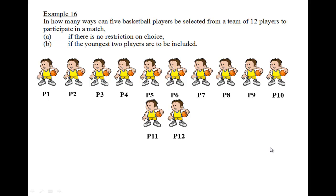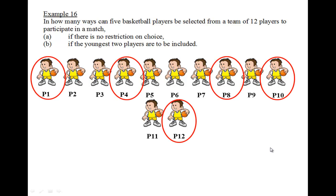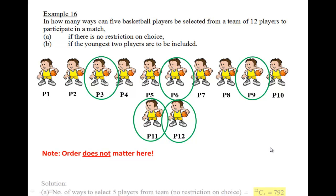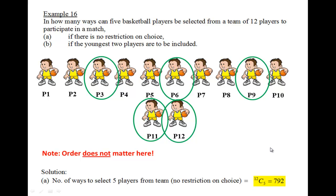Essentially, if I have 12 players to choose from and I require five basketball players, I can choose any five of them because there are no restrictions. Take note that the order does not matter, because as long as I pick them they form a team. Therefore, the number of ways to choose these five players would be 12 choose 5.